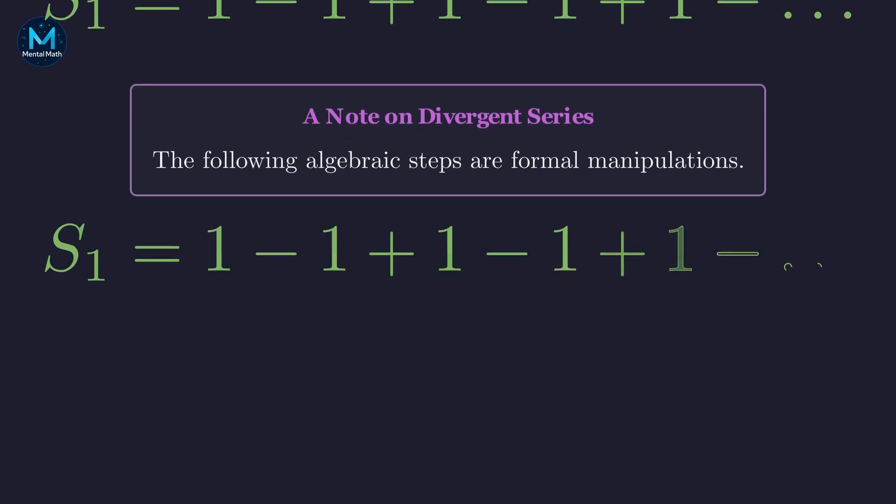Let's begin the formal calculation for S sub 1. We will try to express S sub 1 in terms of itself. The key idea is to subtract S sub 1 from the number 1. This gives us 1 minus S sub 1 equals 1 minus the entire series enclosed in parentheses. Now, we will formally distribute the negative sign through the parentheses.